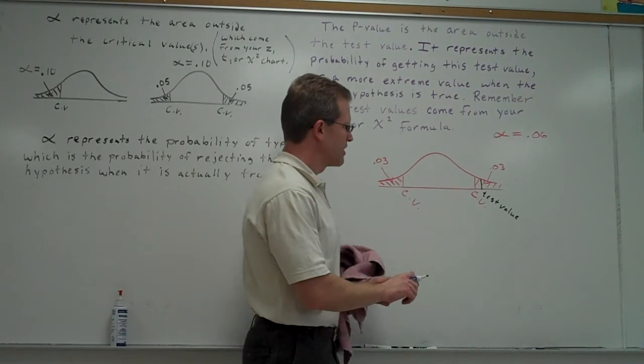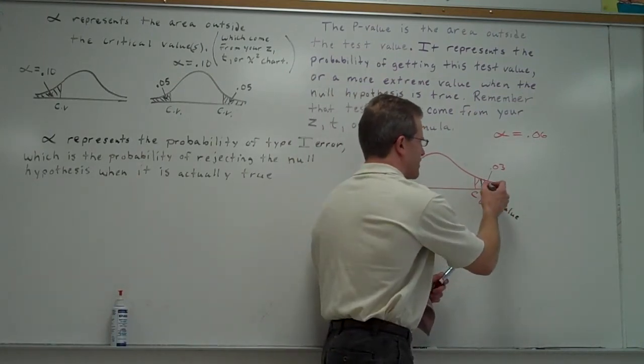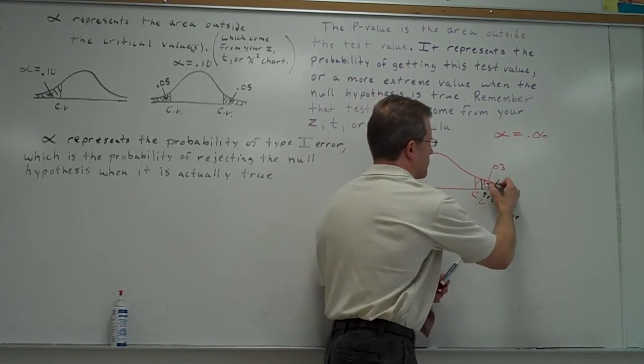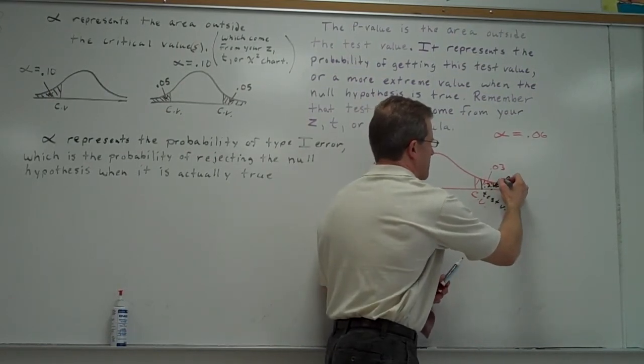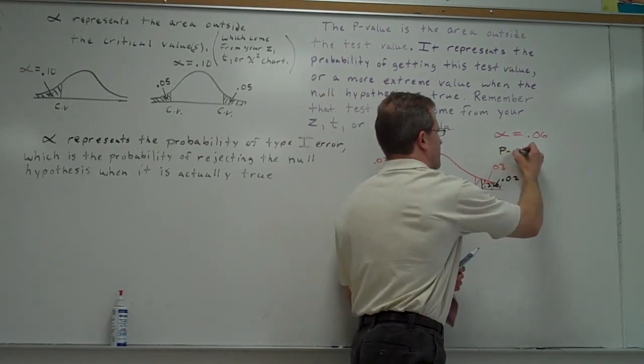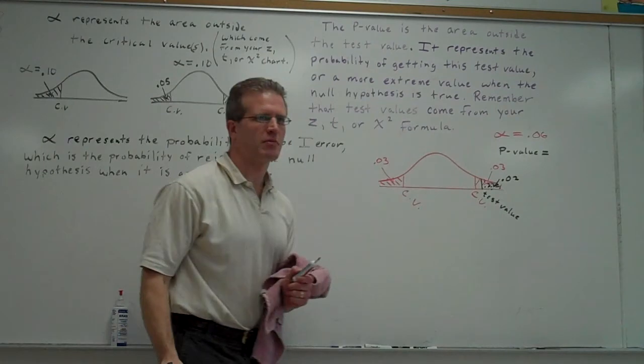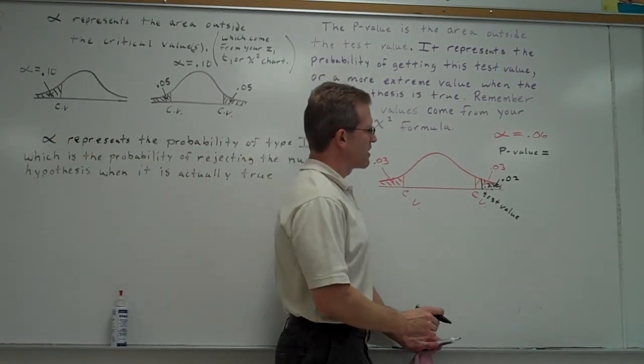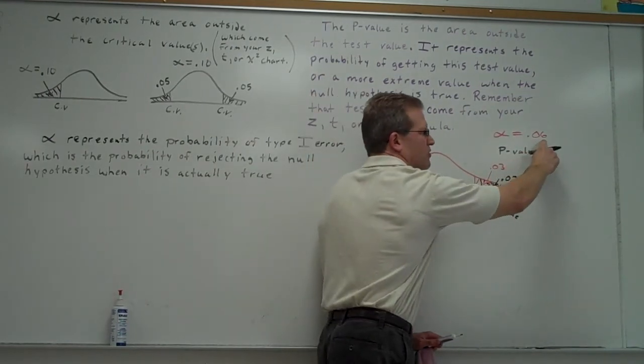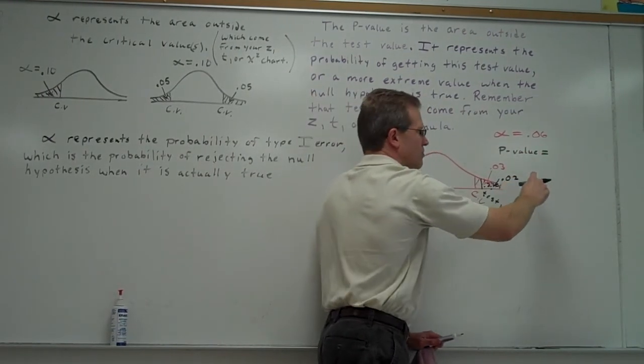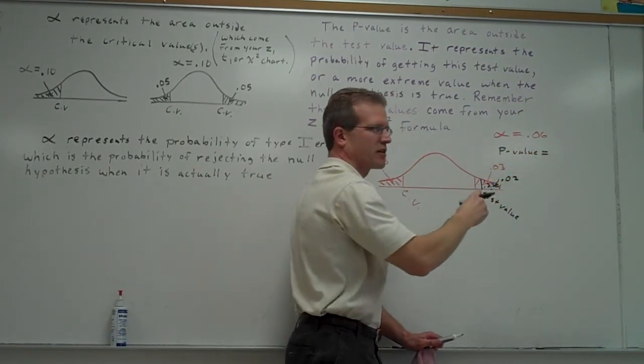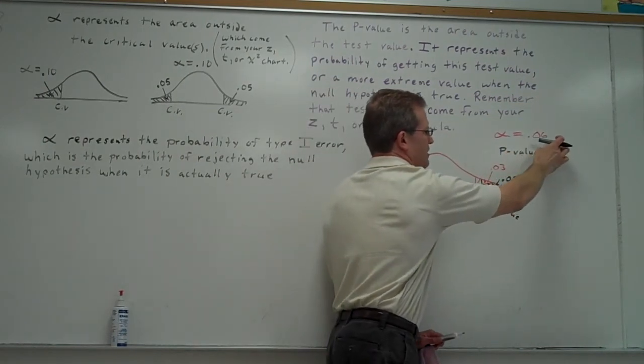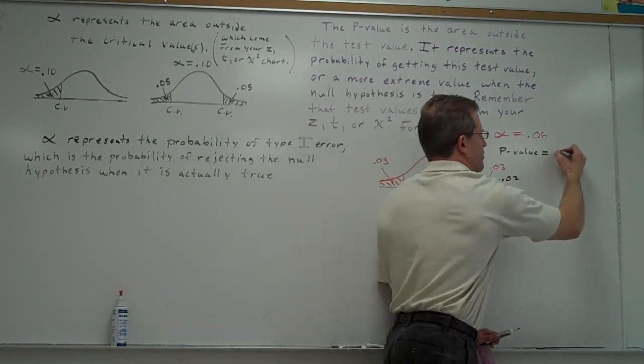So let's say that you find the test value and you go to one of your charts and you look up this area right in here and you get 0.02. And then maybe the question asks you to give the p-value. So then you say, well, it's two-tailed. So alpha actually includes both tails, doesn't it? So we don't want to compare two tails to one tail. We want to compare two tails to two tails. So if the total of both tails is 0.06, then we should double this number too. Take 2 times 0.02.